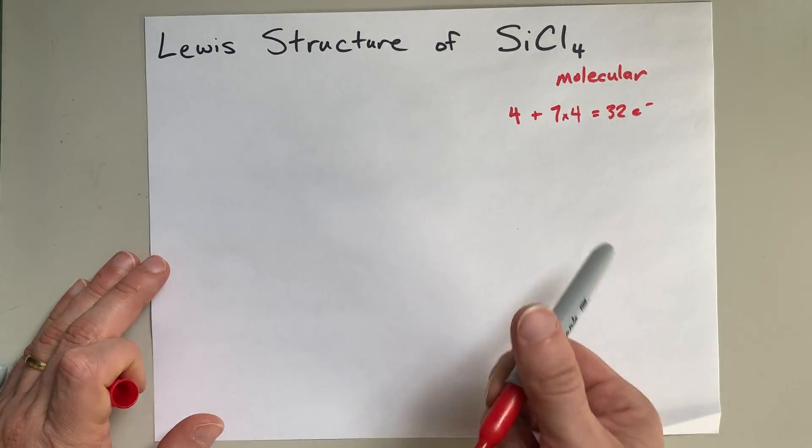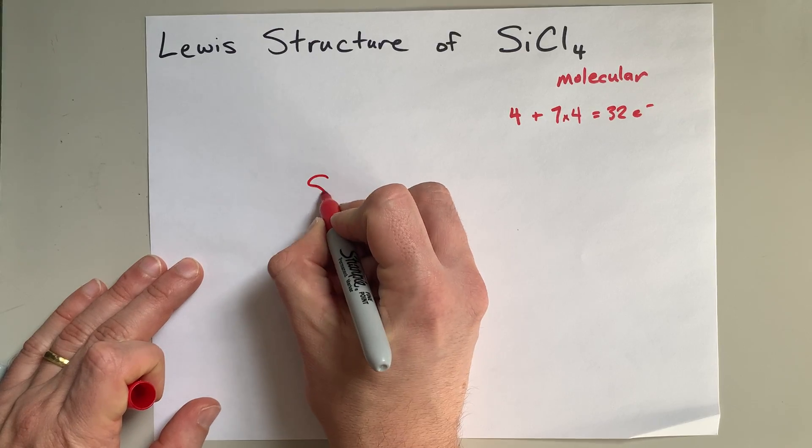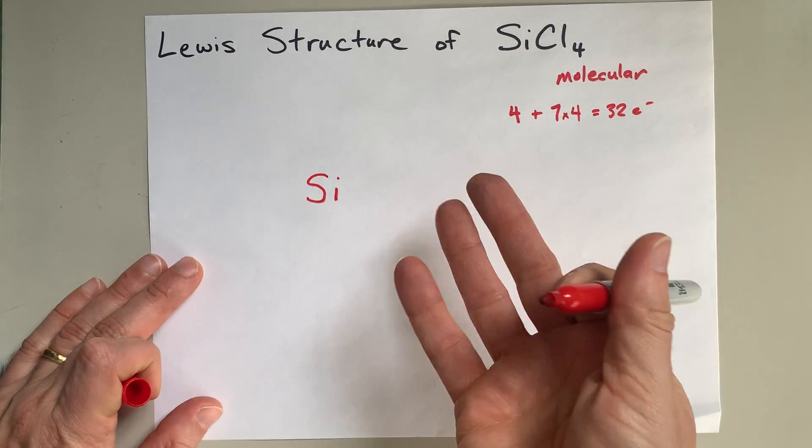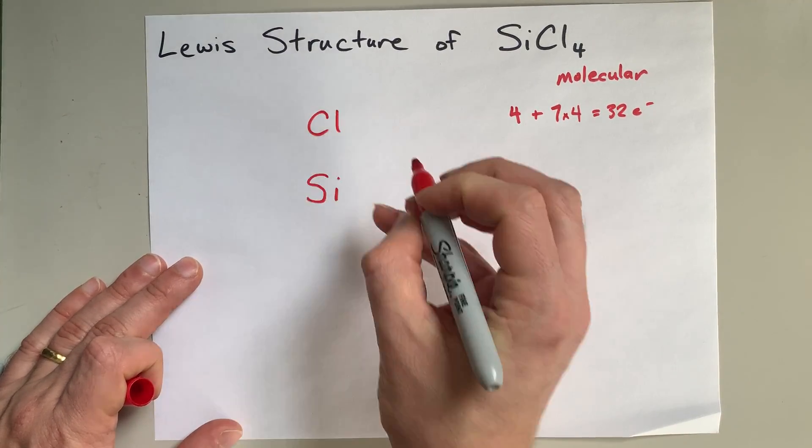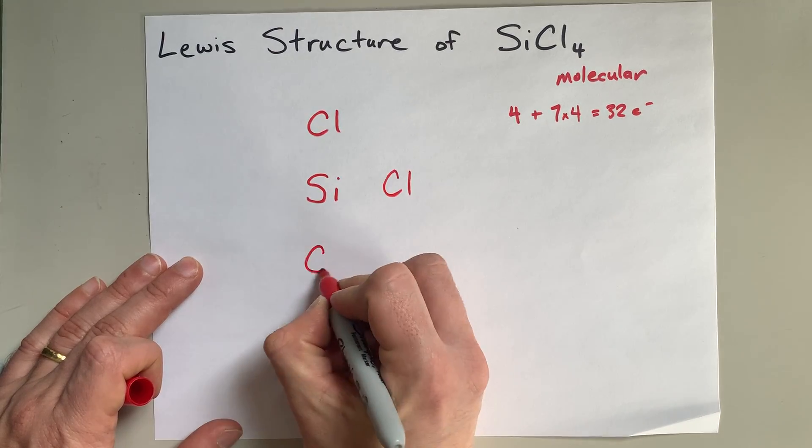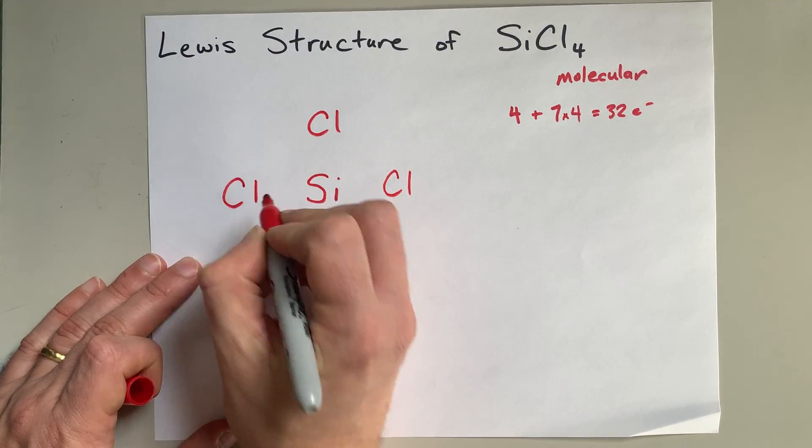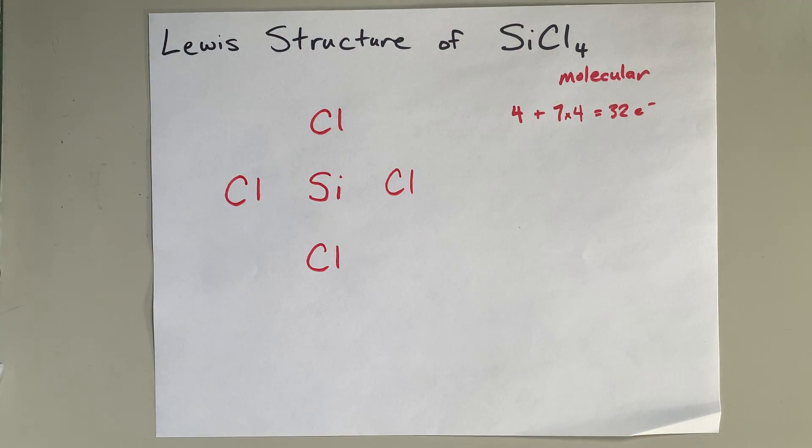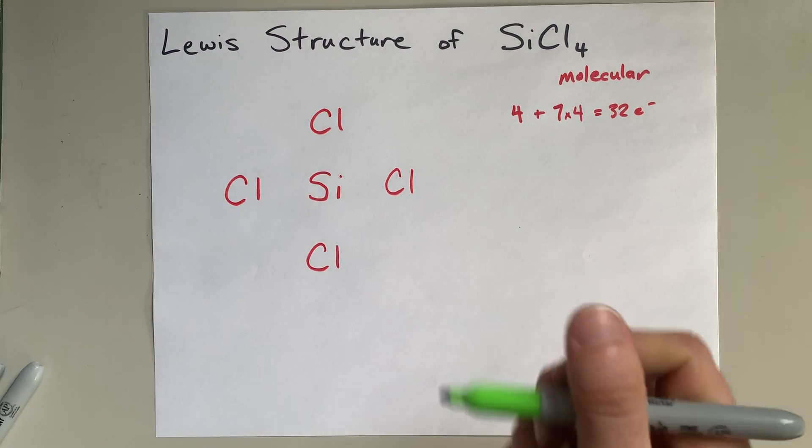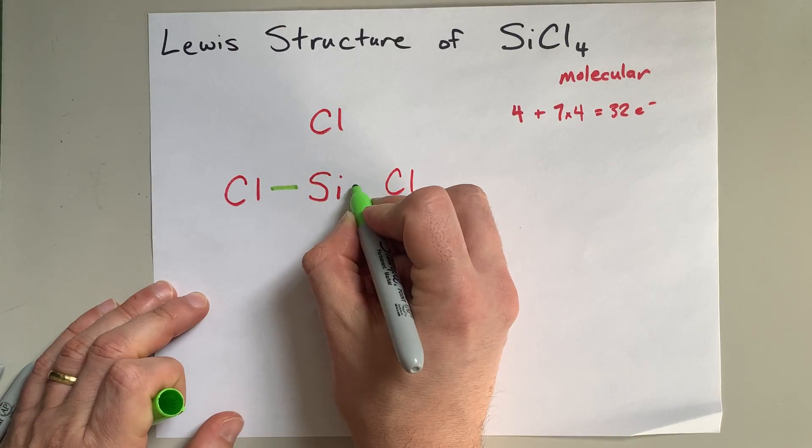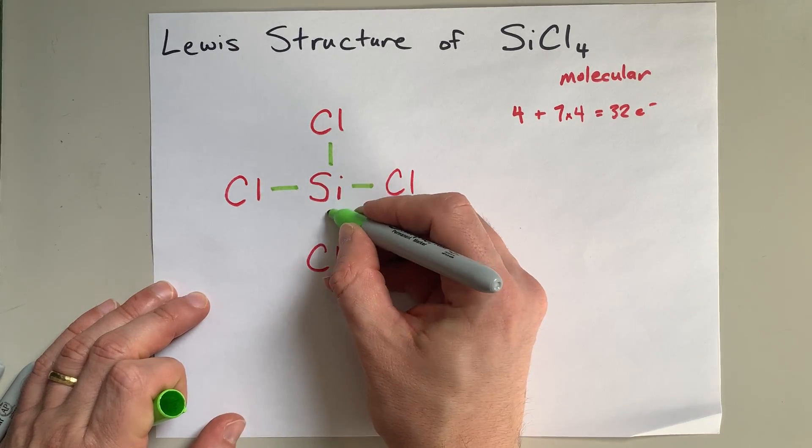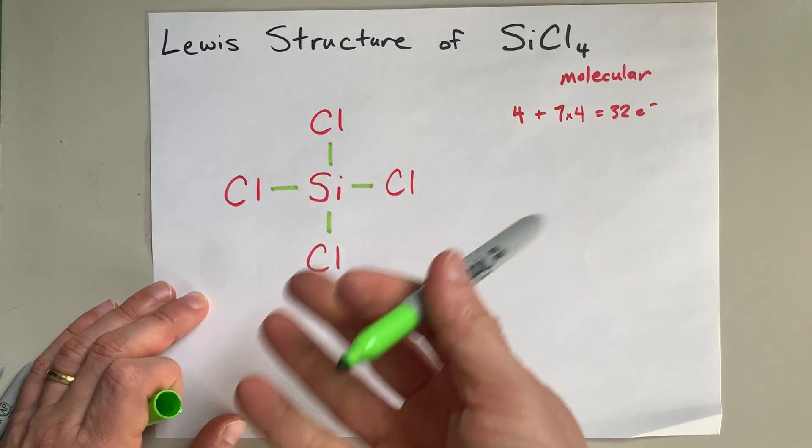Now, the way I draw molecular Lewis structures is to put my central atom in the center, and then surround it with all of the others. I call these the outer atoms. So there's my Si, and there's my four Cls. The next thing I do is I connect each of the outer atoms to the center atom, because they have to be connected, or it wouldn't be a molecule.